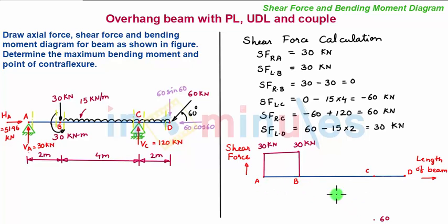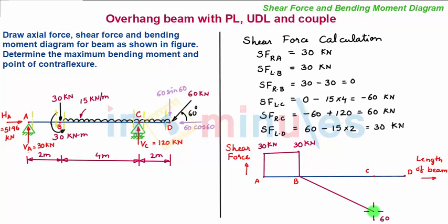Now how is the shear force varying between point B and C? If you see the load diagram, between point B and C there is a uniformly distributed load, so the variation of shear force is linear. We connect it with a straight inclined line as shown in the figure.